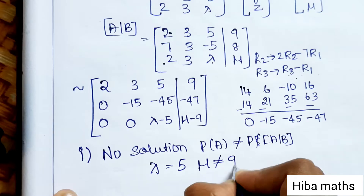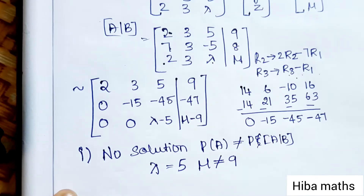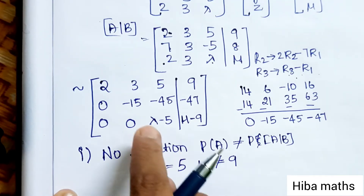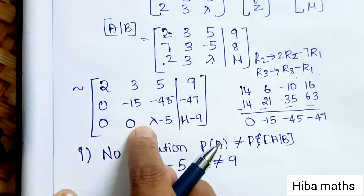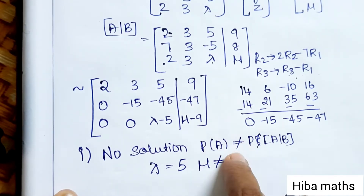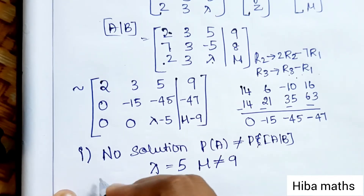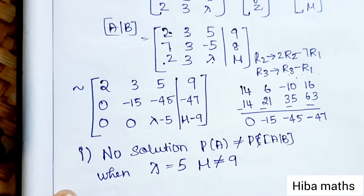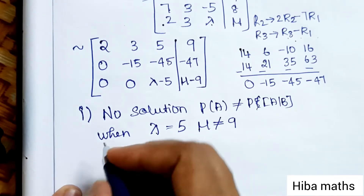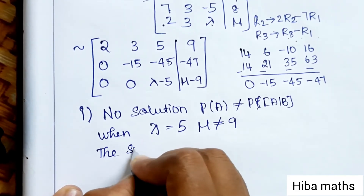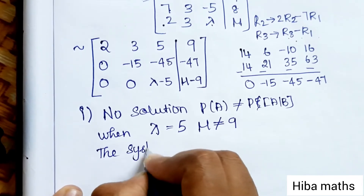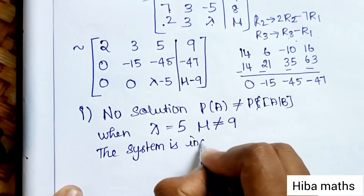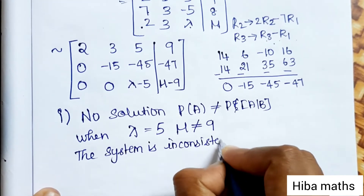For no solution: when λ-5 = 0, i.e., λ = 5, and ν ≠ 9, the rank of A is 2 and rank of [A|B] is 3 — they are different. So when λ = 5 and ν ≠ 9, the system is inconsistent and has no solution.